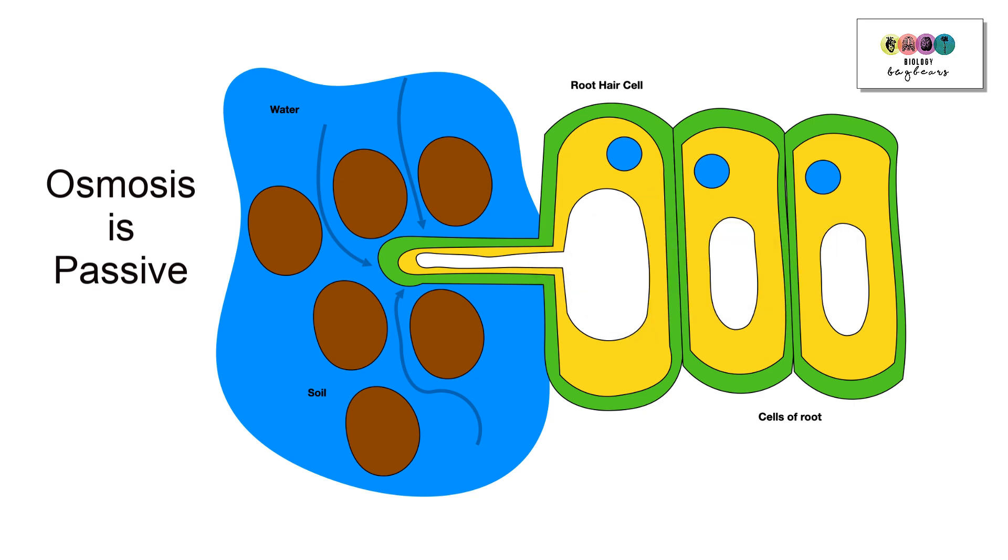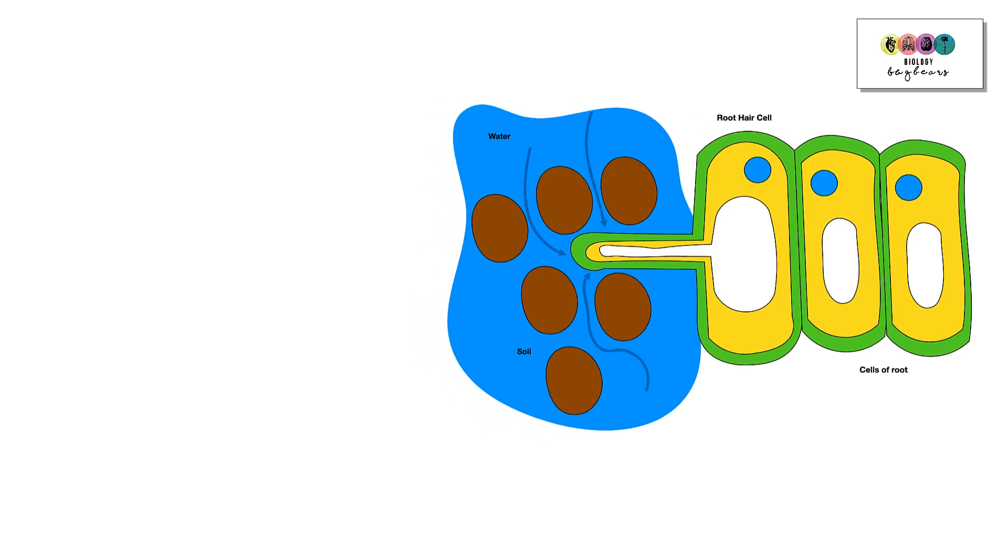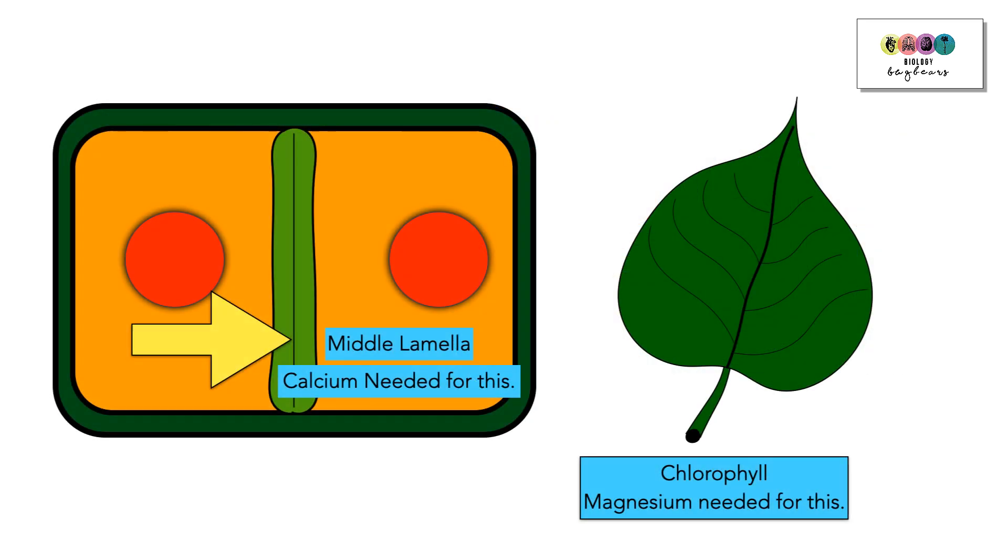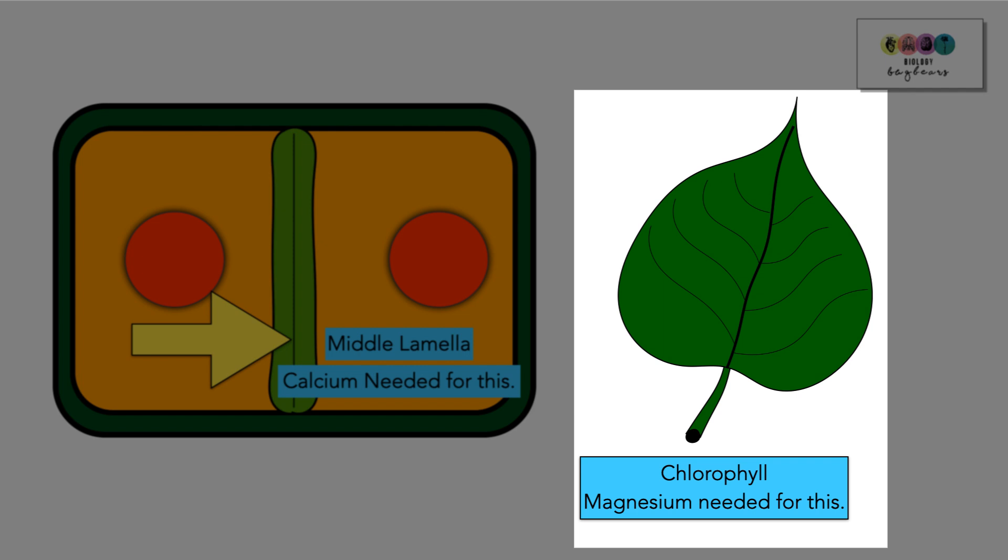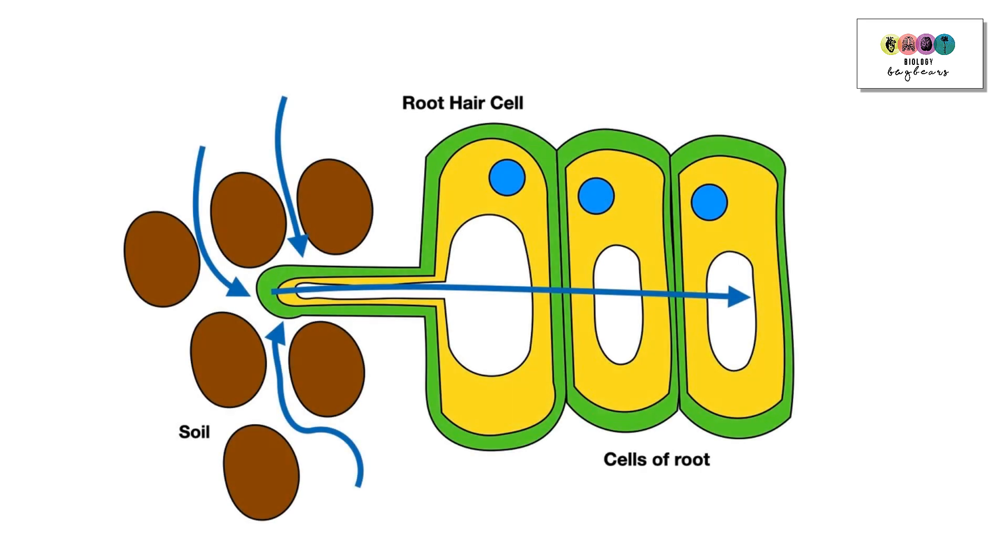As well as water, plants need important minerals, and these minerals are transported from the soil into the root hair cell by means of active transport. Once inside the root hair cell, they are transported with the water up through the plant. For example, magnesium is needed for the formation of chlorophyll and calcium is needed for the formation of those middle lamellae.